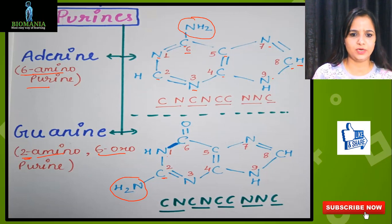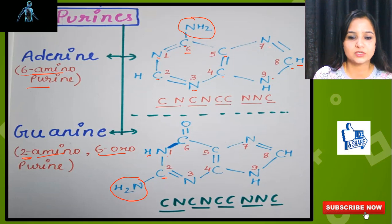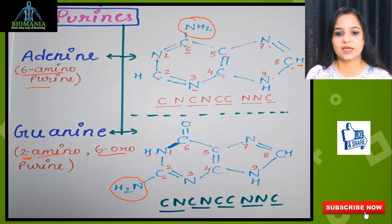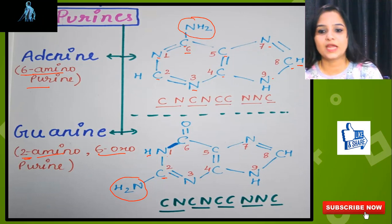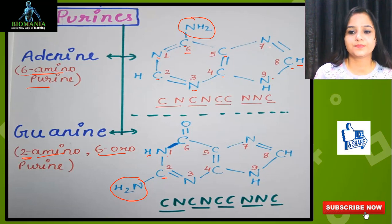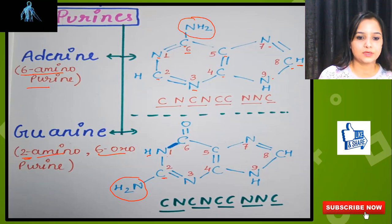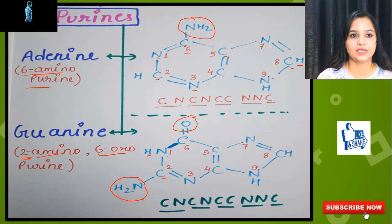For nitrogen valency satisfaction, one hydrogen is added — giving NH. Then bonds continue: single bond, double bond alternating throughout the ring. All three valencies of each nitrogen are satisfied, all four valencies of each carbon are satisfied with alternating single and double bonds. For the remaining carbon, one hydrogen is placed to complete the structure. So guanine has both an amino group and an oxo group, and that is the simplest way to learn the structures of both adenine and guanine.